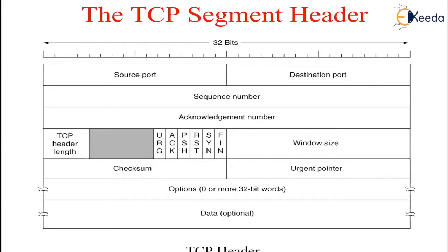The TCP header length field tells how many 32-bit words are contained in the TCP header. This information is needed because the options field is of variable length, and so the header is also of variable length.